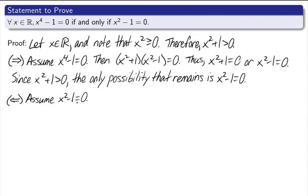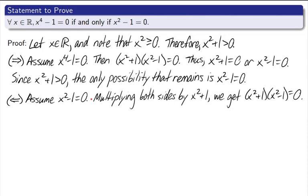Let's multiply both sides of this equation by x squared plus 1. I'm allowed to do that because x squared plus 1 is greater than 0. You can't multiply both sides of an equation by 0, but that never happens in this case. Multiplying both sides by x squared plus 1, we get x squared plus 1 times x squared minus 1 is equal to 0. And yes, I did multiply the right side by x squared plus 1, but 0 times anything is still 0. Thus, x to the fourth minus 1 is equal to 0. And remember, that's what we were trying to show. So we're finished.